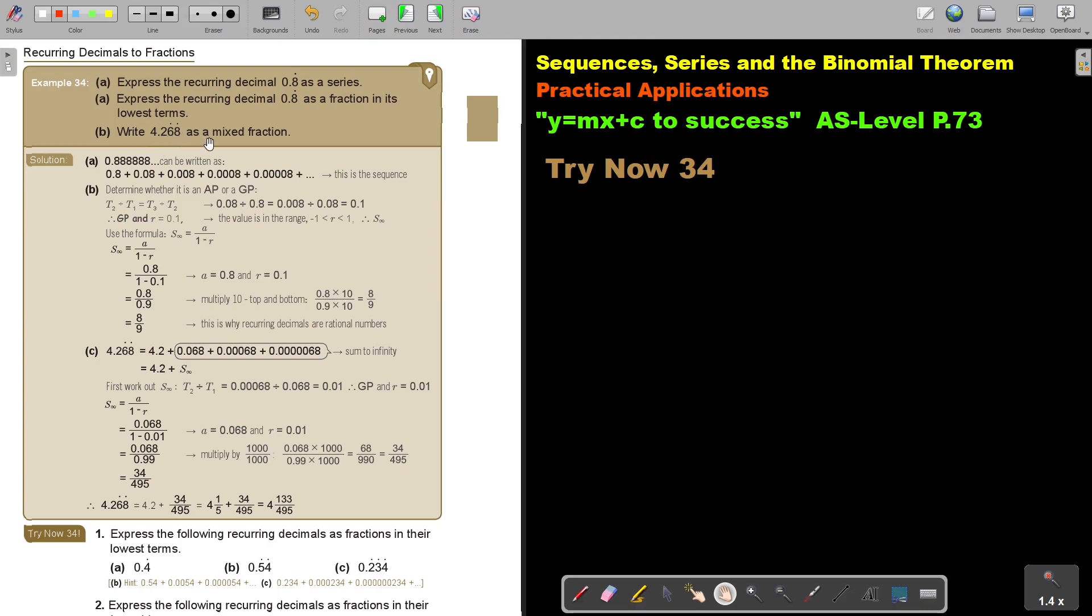And then write as a mixed fraction. I do exactly the same. Now in this case it's just starting at 4.2 and now the recurring part. So it's 0.068 and then make that all zeros and then repeat 68. All zeros repeat 68. So it's 4.2 plus S to infinity.